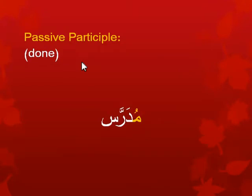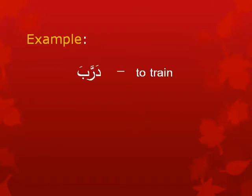In reality the difference is so slight it's usually not noticeable — it's context that tells you. If we say al-mudarris dakhala as-saff — the mudarris entered the class — it's the doer, obviously. If we say al-risala mukattaba — which one are we talking about, dictated or one who dictates? Obviously it's the done to.